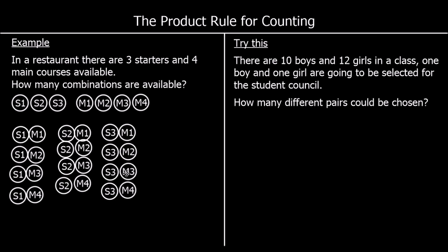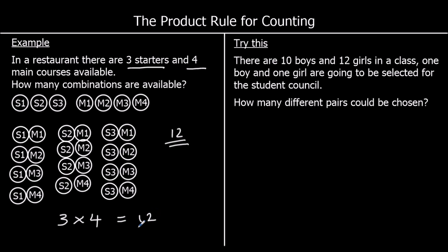So twelve different combinations are available. But the product rule for counting is the quick way of working this out. Product means multiplication, so it's using multiplication to add these up quickly. If there are three starters and four main courses, for each of the starters there are four options, so three times four gives us the 12.